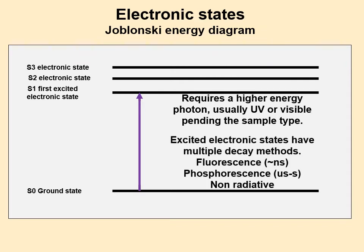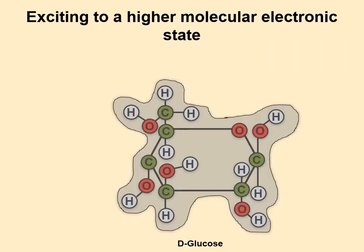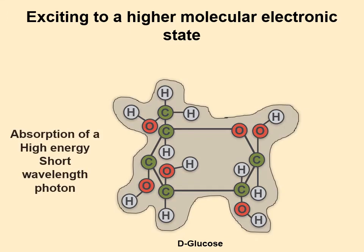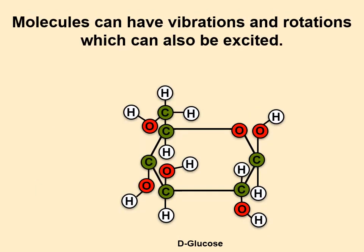It can get down through fluorescence, phosphorescence, or some non-radiative method. To visualize this: when we put in the ultraviolet photon, it just excites that electron cloud — not the rest of the molecule, just the electron cloud.